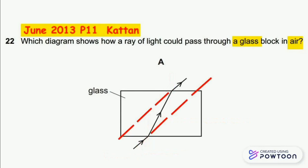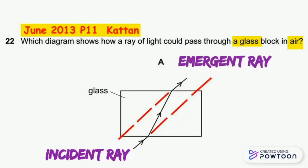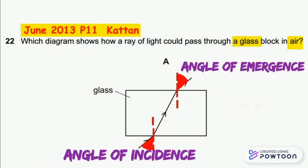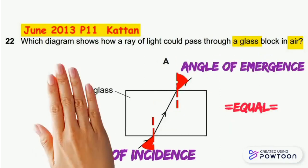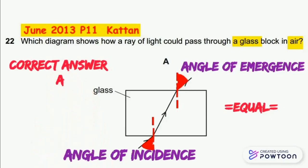We notice that if we draw an extension for the incident ray and an extension for the emergent ray, both incident and emergent rays are parallel. As a result, both angle of incidence and angle of emergence are equal, and the correct answer is A.